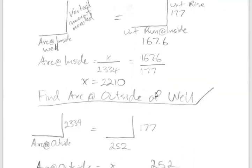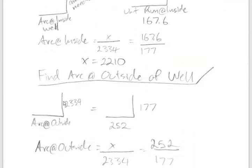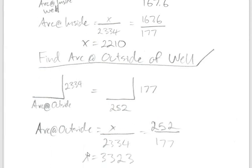For the outside of the well, it's the same calculation but using the rise and run at the outside of the stairwell — same total rise but a longer run at R3. That comes out to 3323mm. So the stairwell arc at the inside is 2210mm and at the outside is 3323mm.